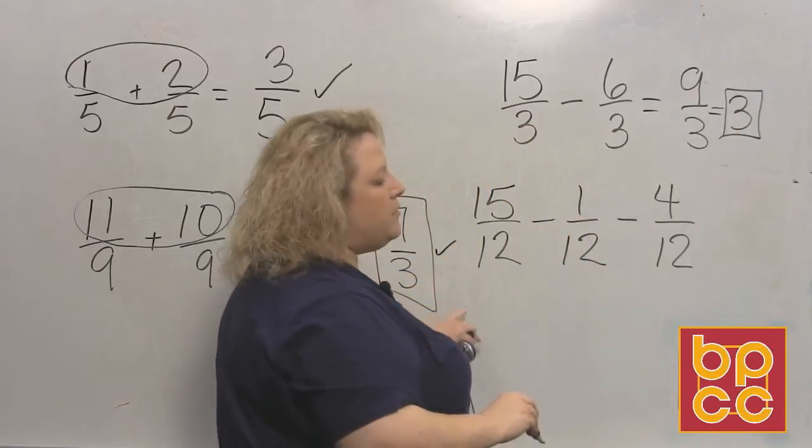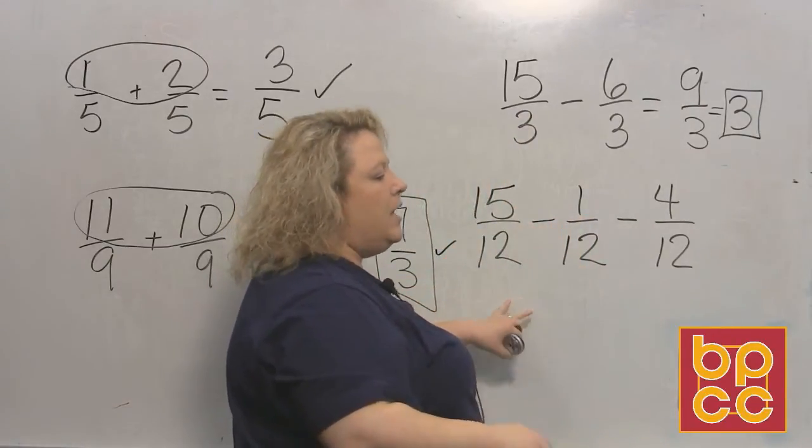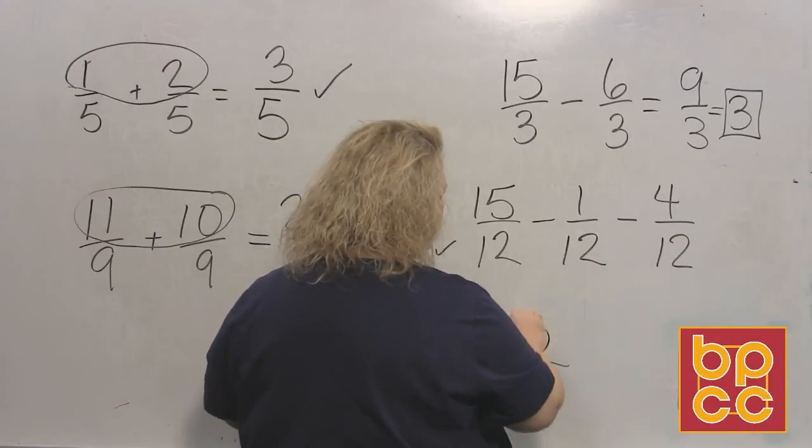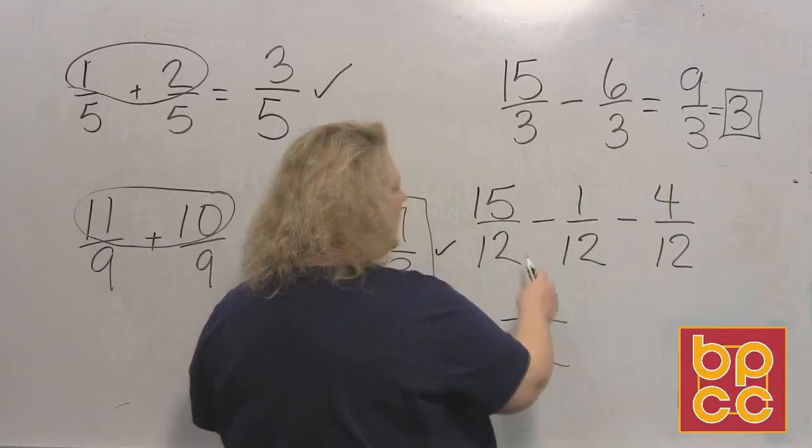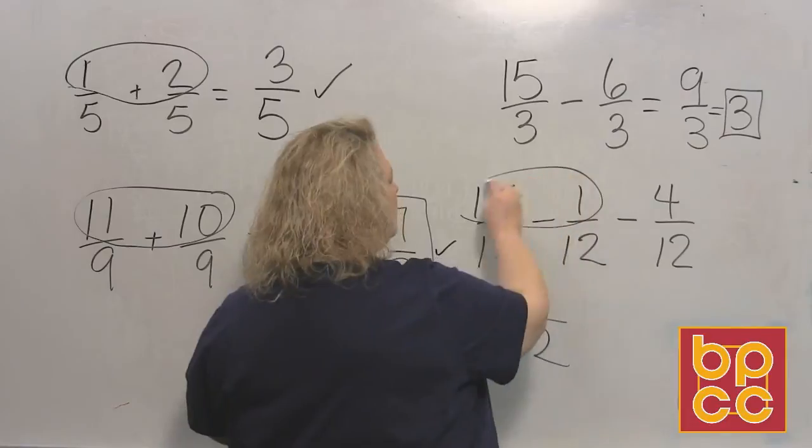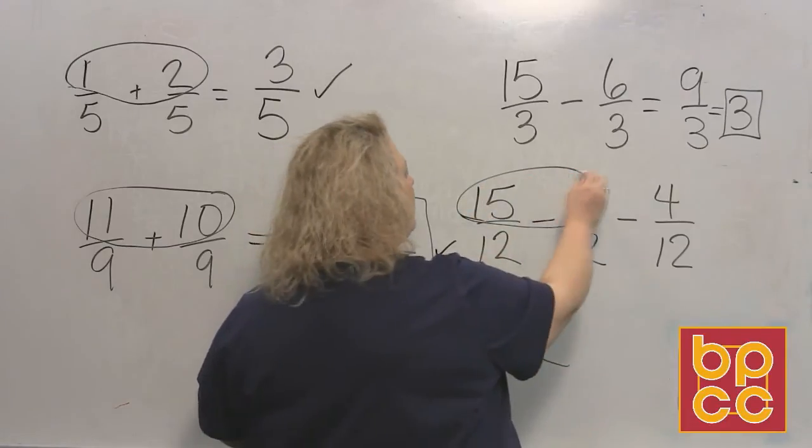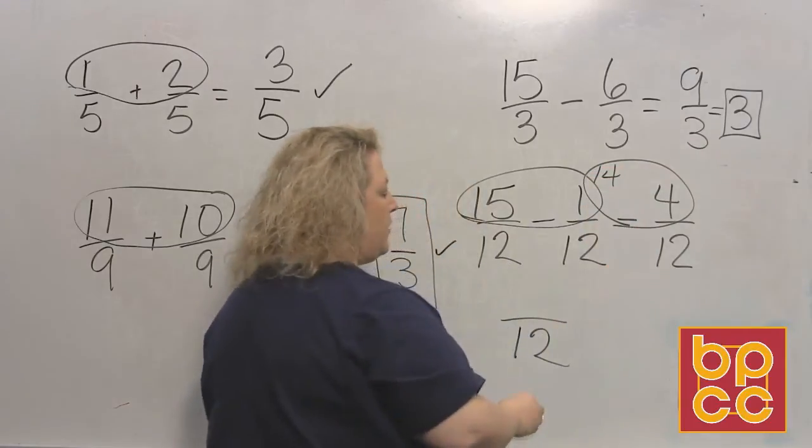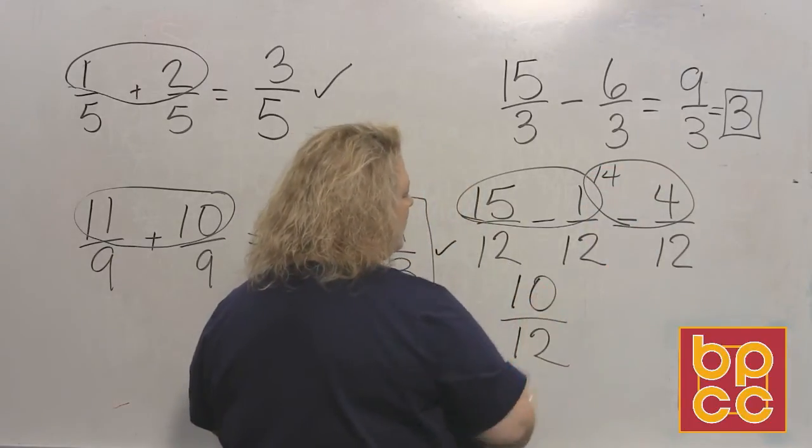Now this last one gives you three fractions, and it's still the same process. You still have a common denominator of twelve, so that's my like denominator. And then I just collect the top, meaning I do 15 minus 1. Fifteen minus one would be fourteen. And then I do 14 minus 4, which is ten, so I have 10/12.